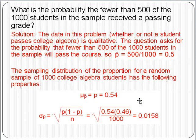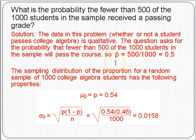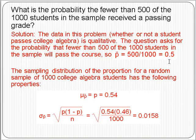What is the probability that, in this sample of 1,000, fewer than 500 of the students receive a passing grade? The question asks for the probability that fewer than 500 of the 1,000 students pass the course. So p-hat, the sample proportion, is 500 out of 1,000, or 0.5. We should use the sampling distribution of the proportion because the data is qualitative — we're recording whether the student passed or not, yes or no.